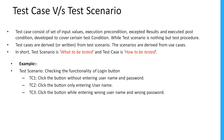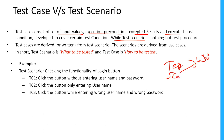For test case versus test scenario: a test case consists of a set of input values, execution preconditions, expected result, and post-condition, developed to cover a set of test conditions. A test scenario is simply a test procedure describing what to test, while a test case describes how to test in a detailed step-by-step process.